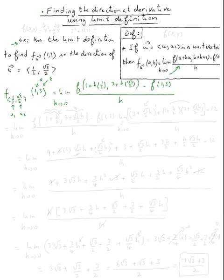Rewriting this, it equals the limit as h approaches zero of f(1 + h/2, 3 + √3·h/2) minus f(1, 3), divided by h.